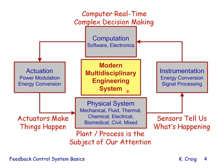All modern multidisciplinary engineering systems have feedback control. The physical system — which could be mechanical, fluid, thermal, chemical, electrical, biomedical, civil, or multidisciplinary mixed — is the plant or process that is the subject of our attention. Actuators make things happen. Sensors tell us what's happening. The engineer designs the complex decision-making to control this modern system, and that decision-making is embedded in a computer which performs real-time control.